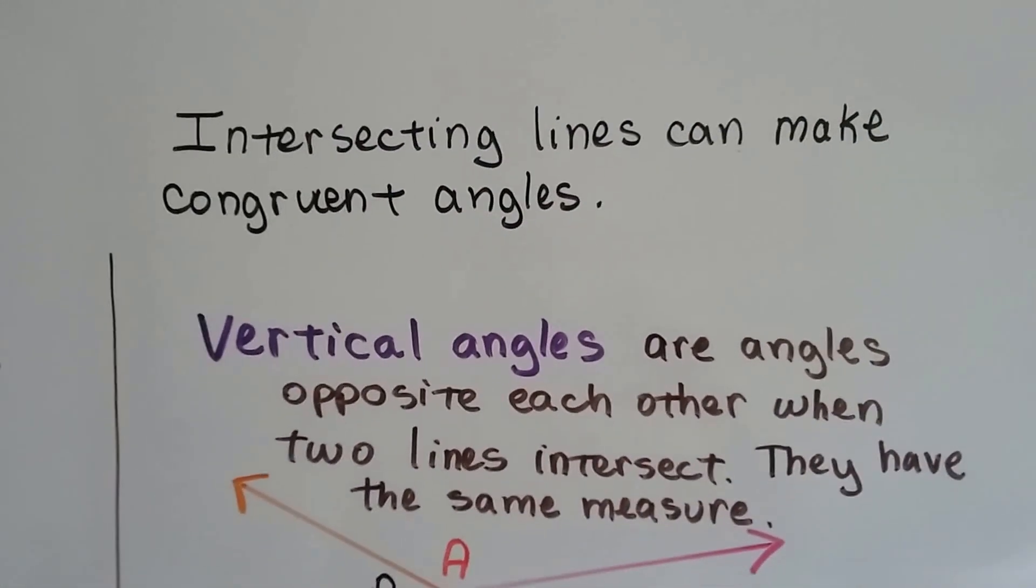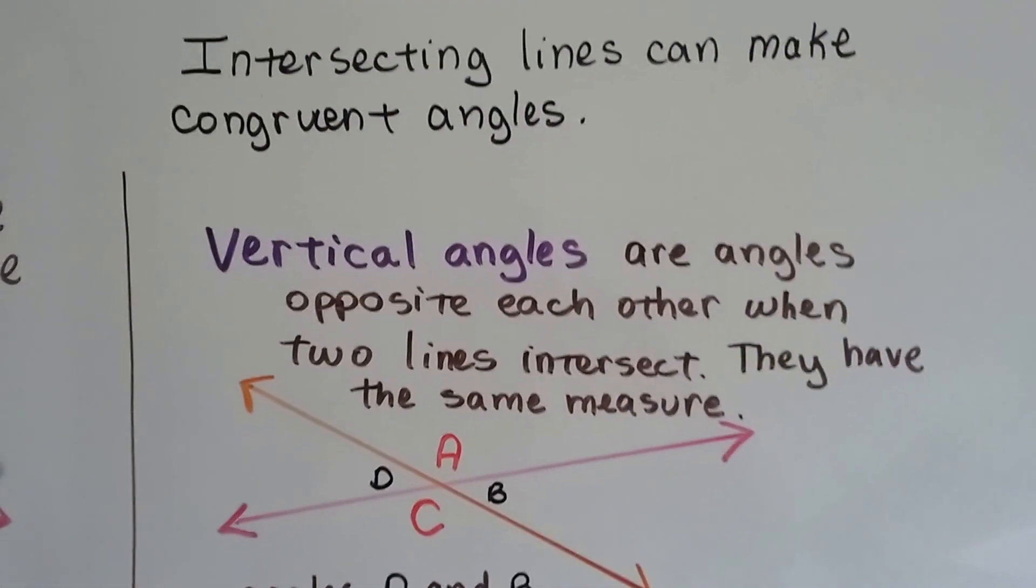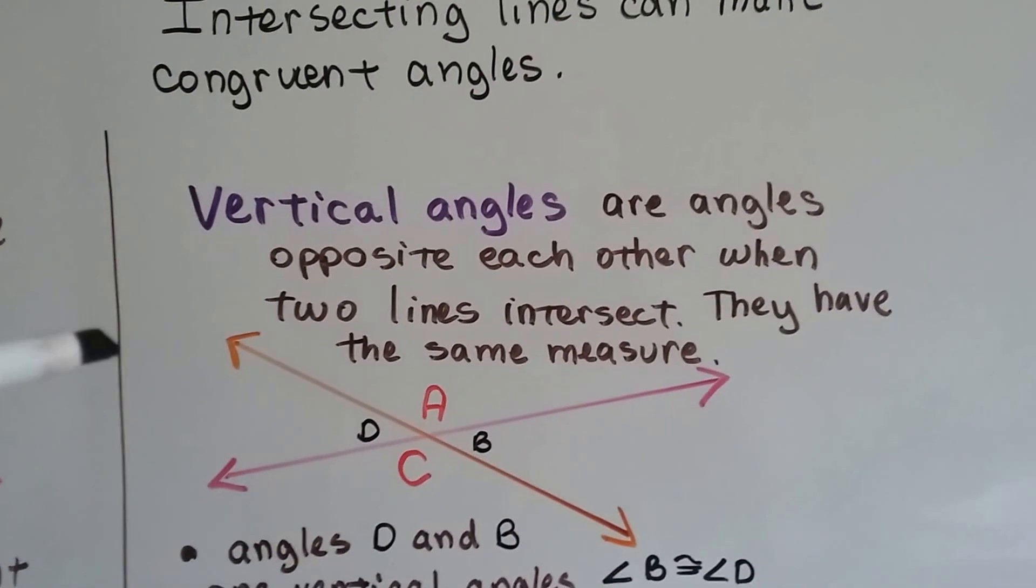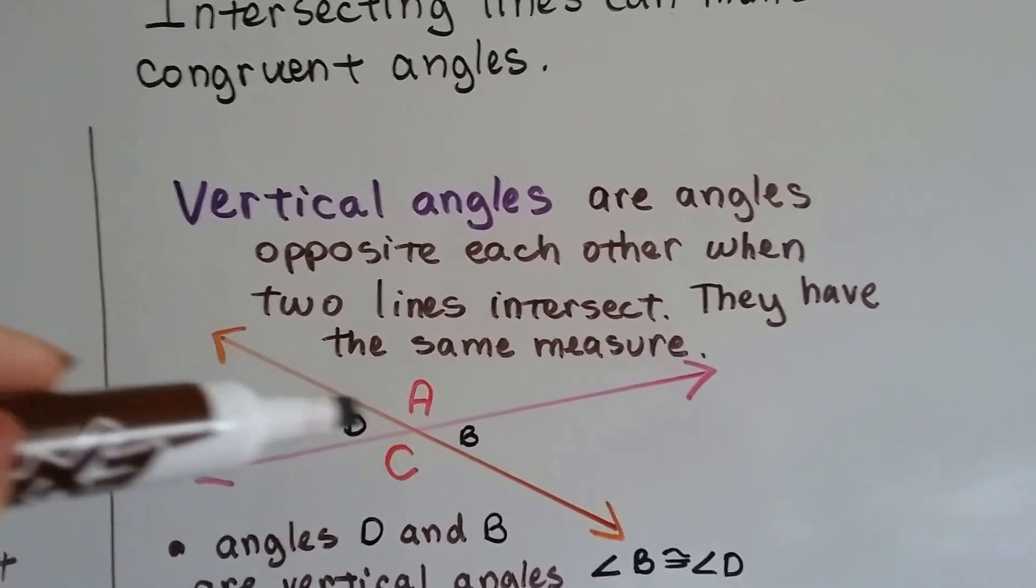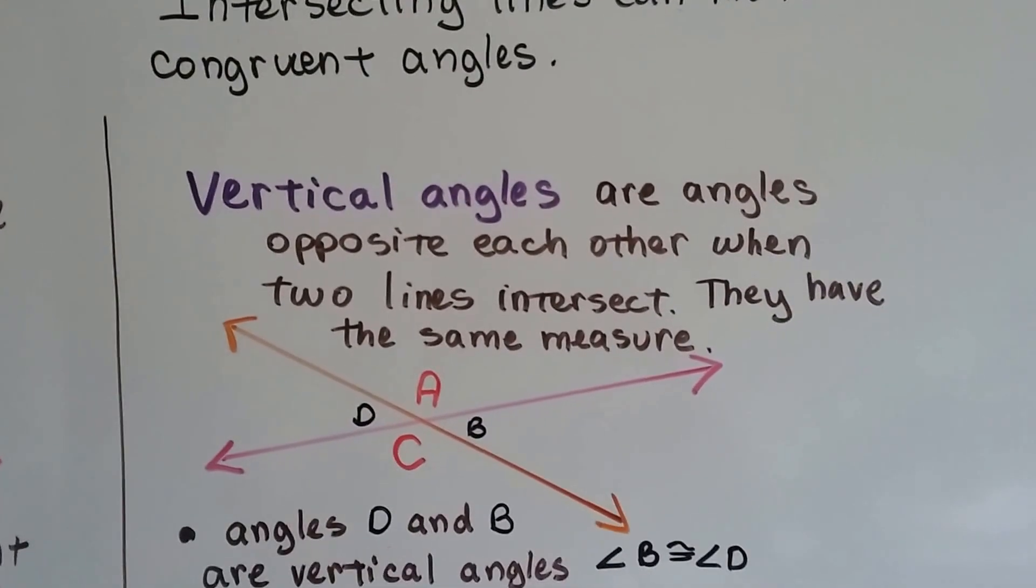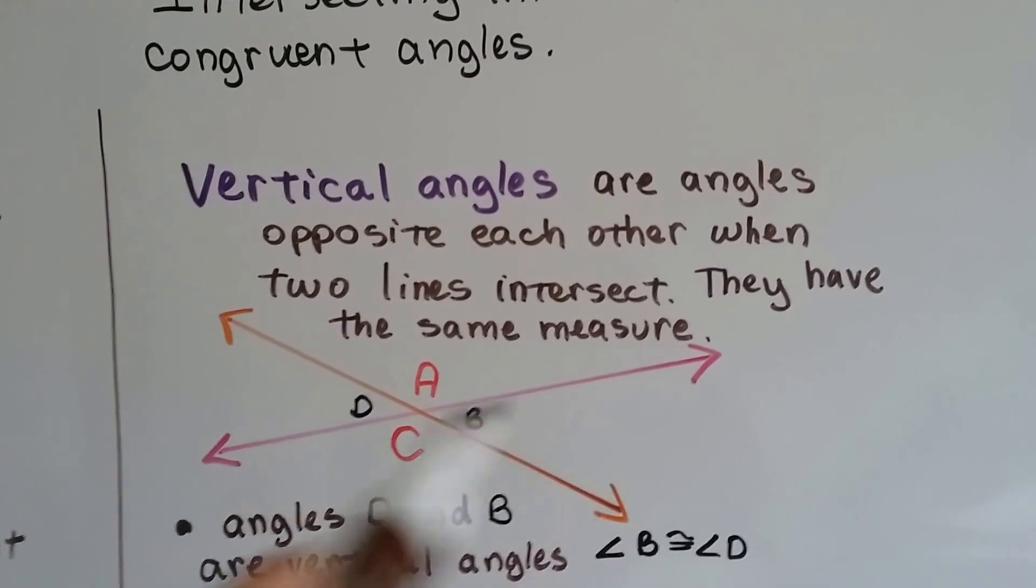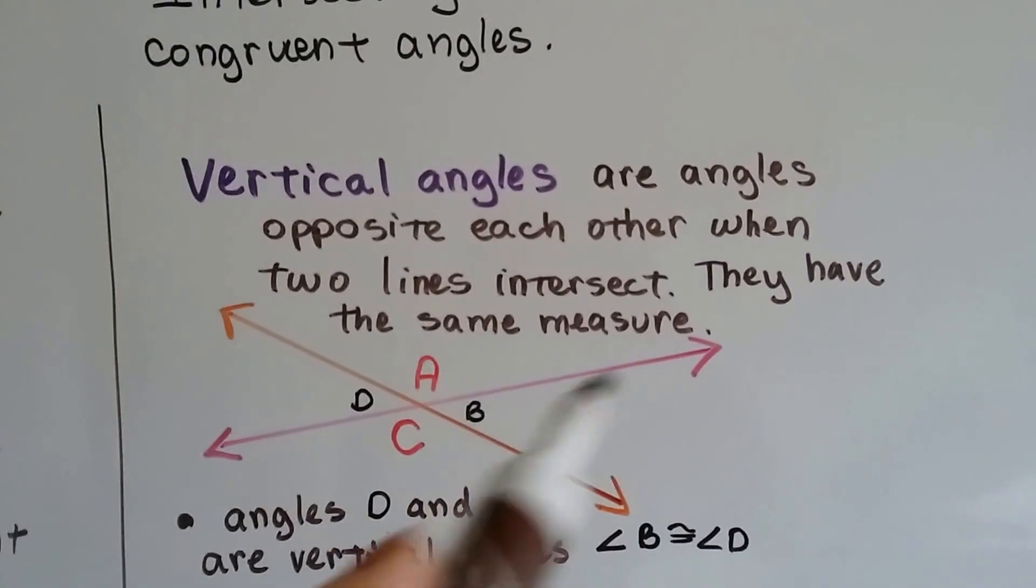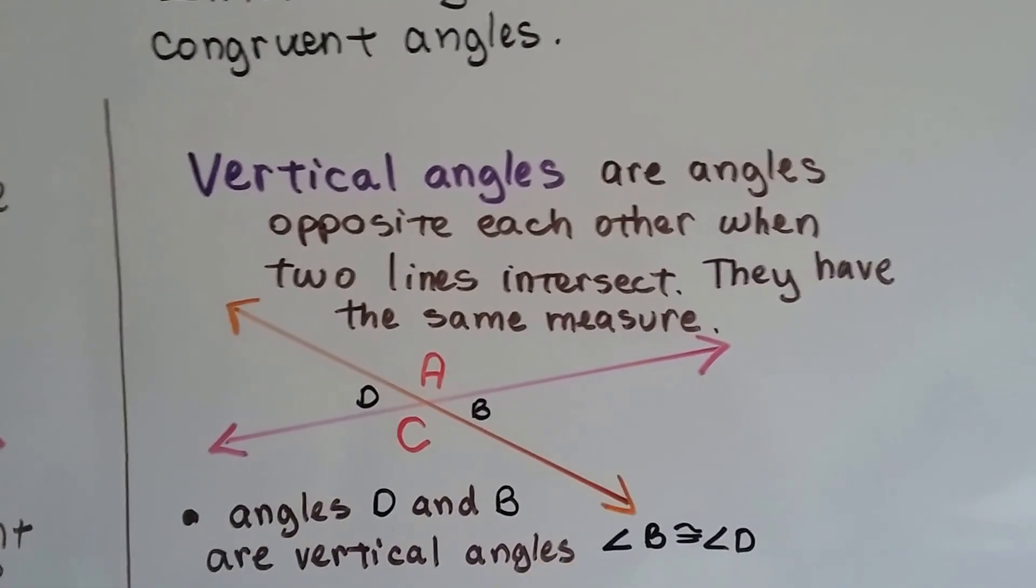Intersecting lines can make congruent angles. Vertical angles are angles opposite each other, like A and C or D and B. When two lines intersect, they have the same measure. So, it's like two streets intersecting, right? Like Main Street and First Avenue or something like that.